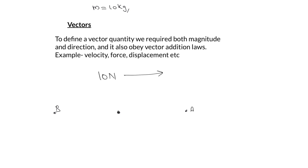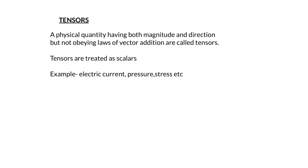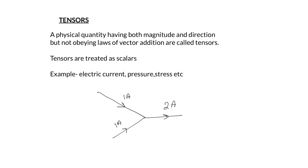Such quantities are known as vector quantities, and they must obey the vector addition rule. Now let's discuss tensors. A tensor is a physical quantity having both magnitude and direction but not obeying the laws of vector addition. An example is electric current. If 1 ampere is passing through a conductor in one direction and another 1 ampere is passing in another direction, the net current through a combined conductor is simply 2 amperes.